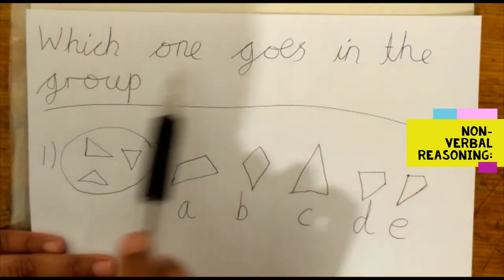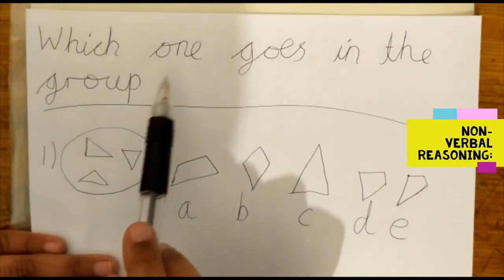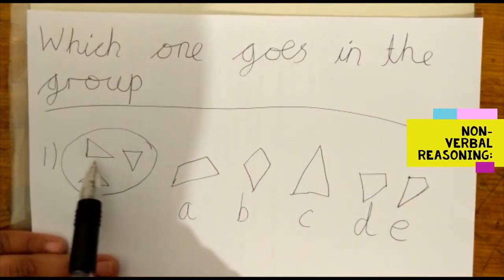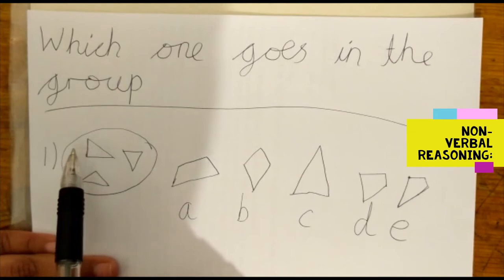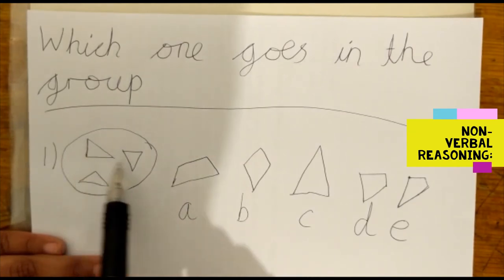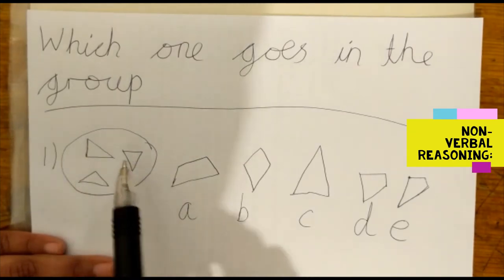Which one goes in the group? In this group, we have shapes with three sides, and three-sided shapes are called triangles.